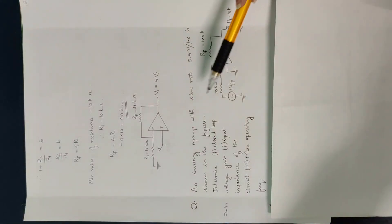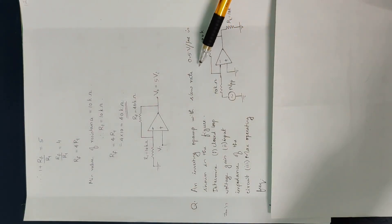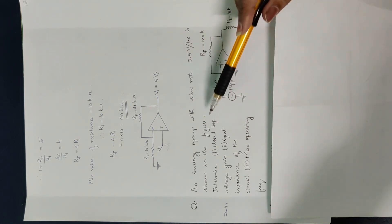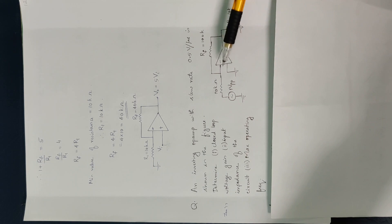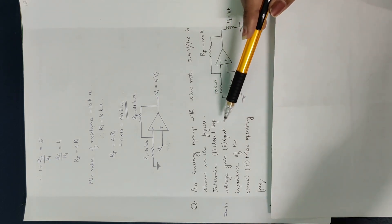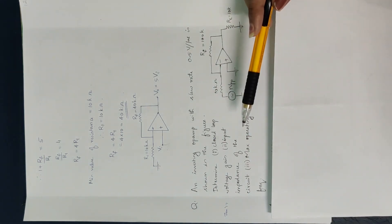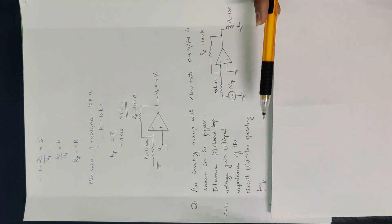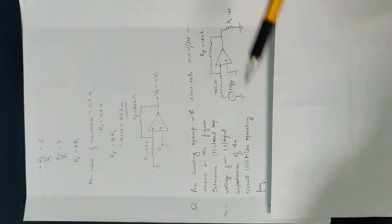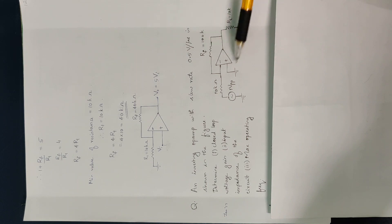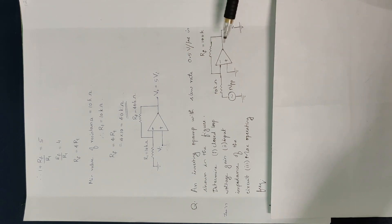The next problem involves an inverting op-amp with a slew rate of 0.5 volts per microsecond, as shown in the figure. We need to analyze the inverting amplifier under the slew rate and determine: the closed-loop voltage gain, the input impedance of the circuit, and the maximum operating frequency.